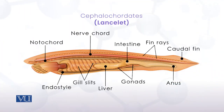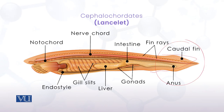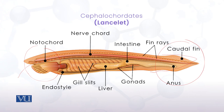If we look at a close view, we can identify the notochord. There is one anterior end and one posterior end. The anterior end is the ventral side of the oral hood, which has a mouth present. With that mouth, there are cilia-like projections which are called cerai.